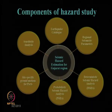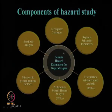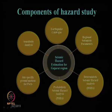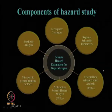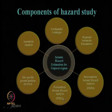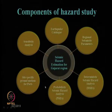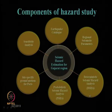For any seismic hazard study, these are the various components. For the seismic hazard study of Gujarat region, we need to first obtain the earthquake catalogue for that region, then regional seismicity parameters, and sensitivity analysis. Using them, we can carry out deterministic seismic hazard analysis and probabilistic seismic hazard analysis, and finally site-specific ground motion analysis for particular sites, which will be discussed in the next module.